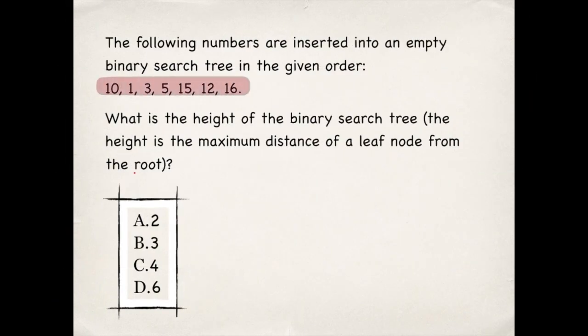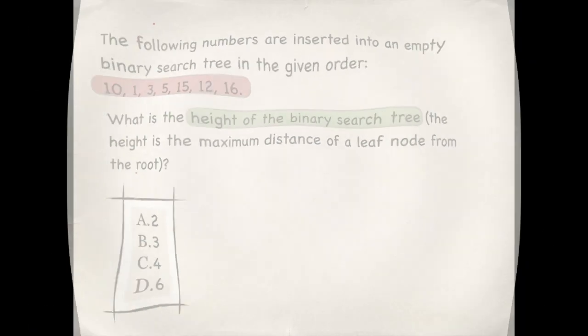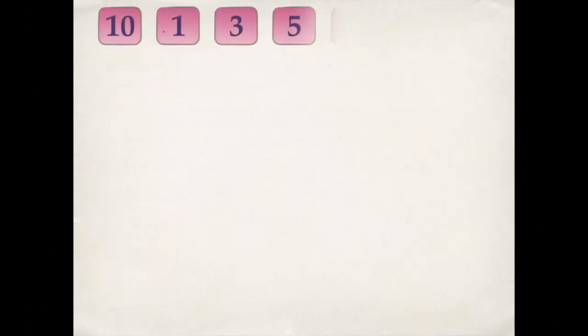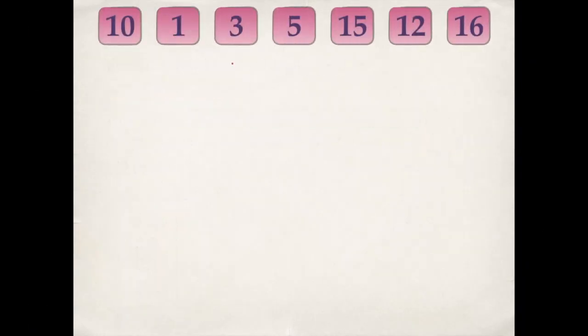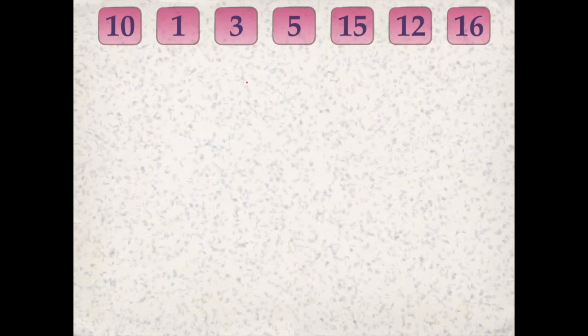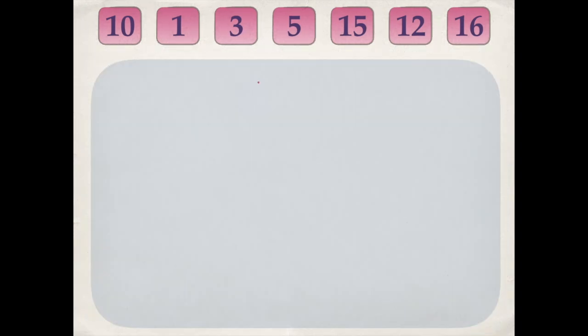These numbers are inserted into an empty binary search tree. We need to find the height of this tree, which is defined as the maximum distance of a leaf node from the root. Let's insert these seven numbers into an empty binary search tree.